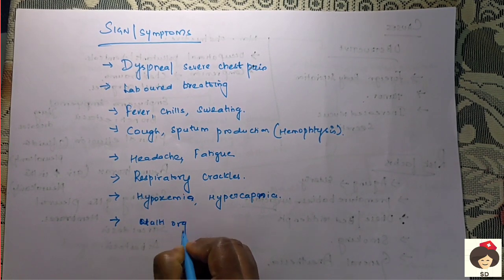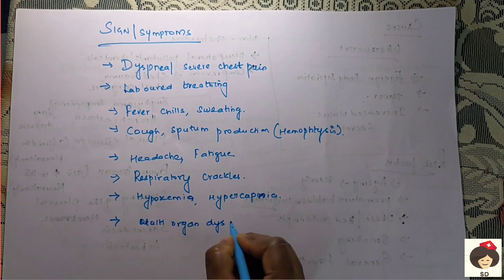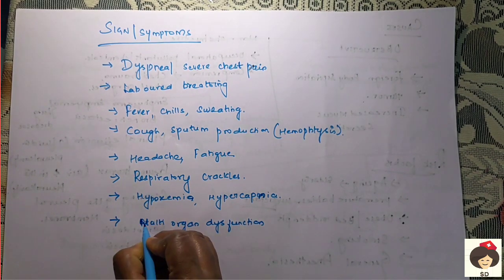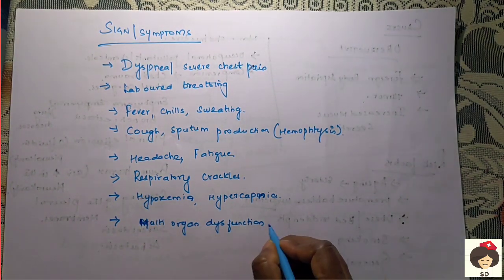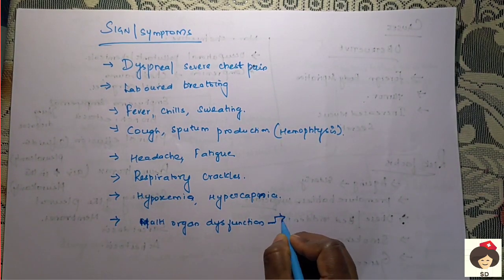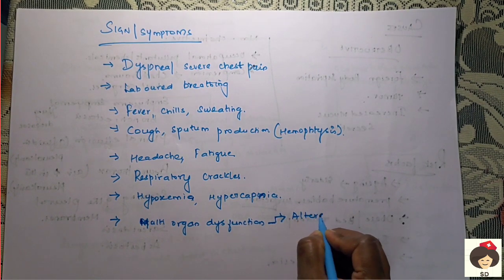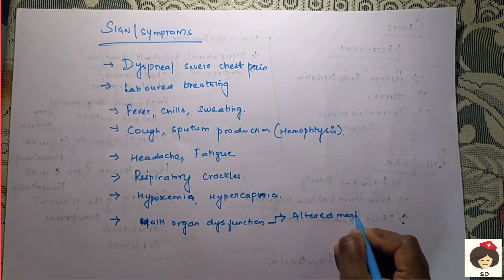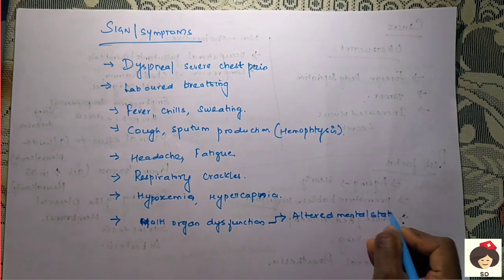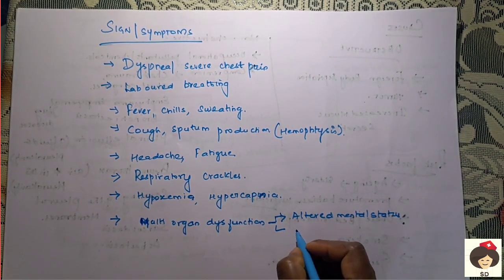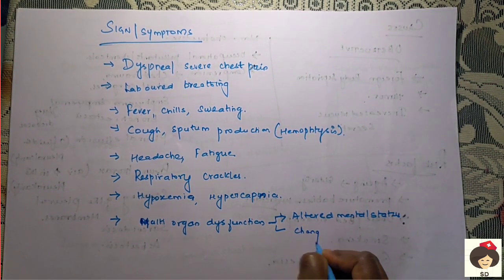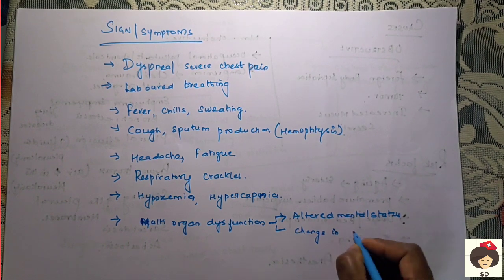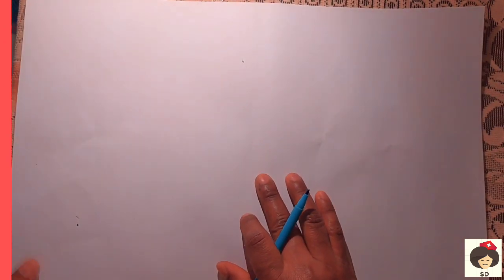Because of impaired gas exchange, all organs will not get enough oxygen, so the patient can go for multi-organ dysfunction. According to which organ is affected — for example, if the cerebrum is affected, the patient will go for altered mental status; if the renal system is affected, there will be changes in urination and renal function. According to the organ where oxygenation is not taking place, that organ will get affected.